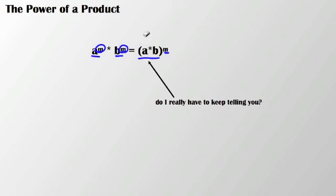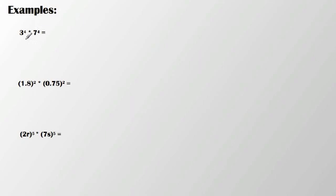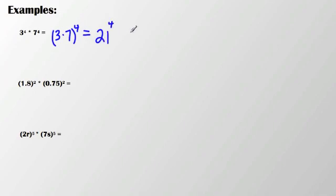Remember, an equation sign also works from right to left instead of just left to right. So really, whatever is convenient for you depending on the problem. Let's take a look at a couple of examples. So in this case, I have 3 to the 4th times 7 to the 4th. If I want to simplify this, the easiest thing to do is multiply 3 times 7 and then apply that to the 4th. So simplified, that would get me 21 to the 4th.